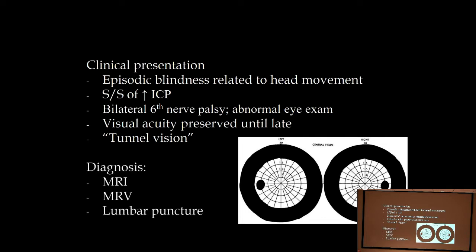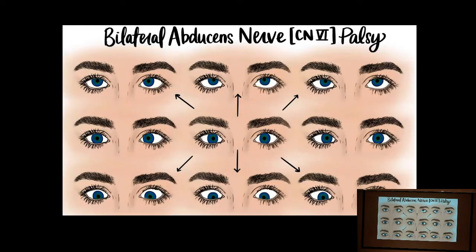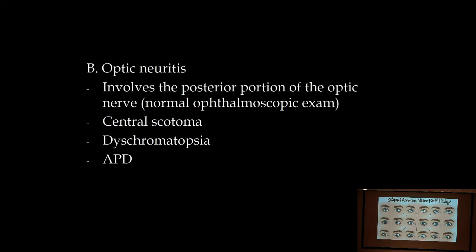If you have papilledema, never go straight to a lumbar puncture — you don't want to cause herniation. Do an MRI first, then an MR venogram to look for venous stenosis. If it looks like idiopathic intracranial hypertension or pseudotumor, then do a lumbar puncture. Also: bilateral sixth nerve palsy should be a big red flag for increased intracranial pressure — when the patient looks to the right the right eye doesn't abduct, and when looking left the left eye doesn't abduct.